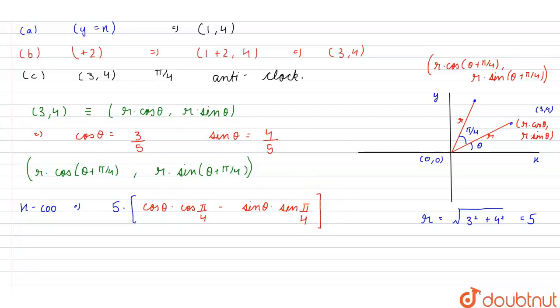Using the value of cos θ and sin θ we found earlier, this becomes 5 into 3 upon 5 root 2 minus 4 upon 5 root 2. So this gives us final x-coordinate as minus 1 upon root 2.